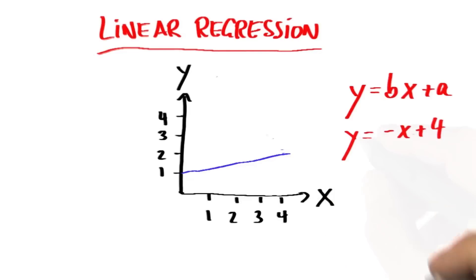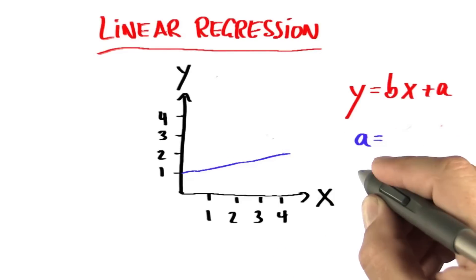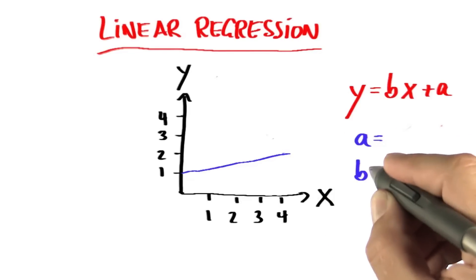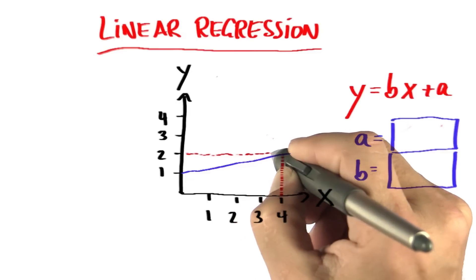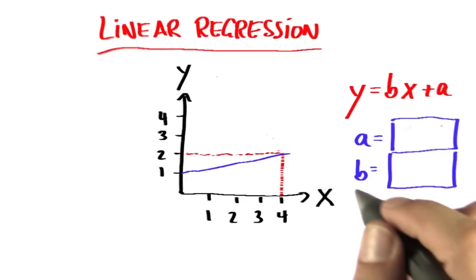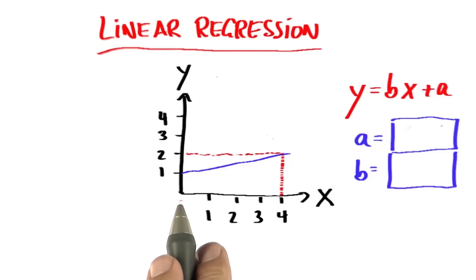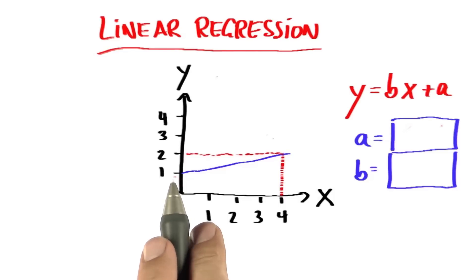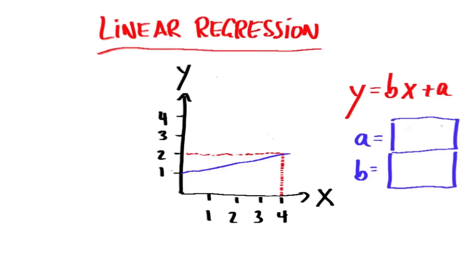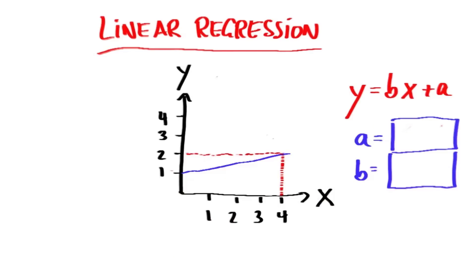A final quiz. Now you get to tell me what A and B is. The line I've drawn for x equals 4 assumes the value y equals 2. Also for x equals 0 it assumes the value of y equals 1. So what's A and what's B for the blue line?